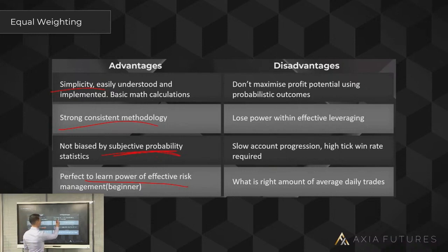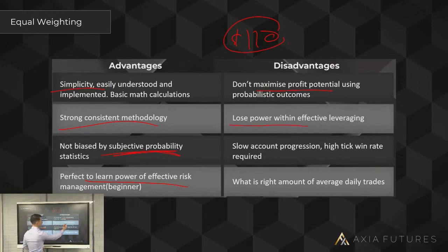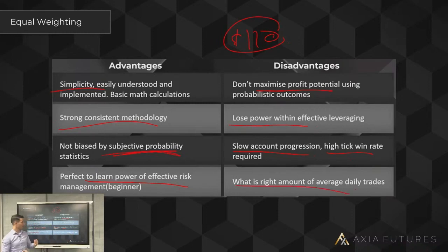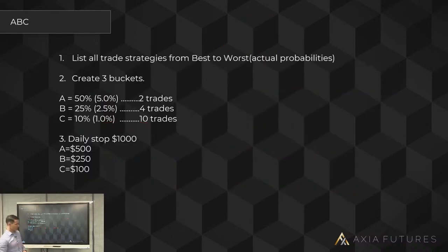The disadvantage: you won't maximize your profit potential. You will miss out on leverage opportunities. There are drawbacks to every strategy — recognize the drawbacks, but recognize more importantly that the advantages always outstrip the disadvantages. You lose the power of effective leveraging, slow account progression, and you need a high win rate to grow the account. Also, if you're quite volatile in trading activity, you might trade yourself out of available risk for the day.